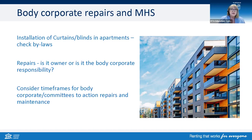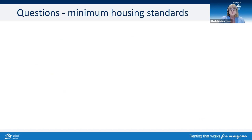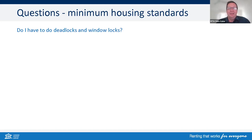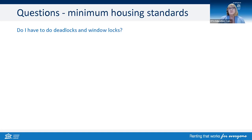Now, some common questions. Do I have to do deadlocks and window locks? The legislation doesn't stipulate deadlocks — it says there needs to be a lock, and on the window there needs to be a functioning lock or a latch. That may be property specific. If you want to put a deadlock on, you can, but there's nothing requiring you to. Again, it's about that case-by-case situation and reasonable security for that individual property.